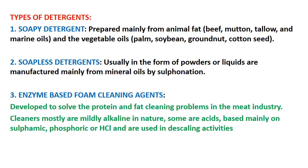Let us understand the types of detergents. We can have three different types: soapy detergents, soapless detergents, and modern enzyme-based cleaning agents. Soapy detergents are prepared mainly from animal fat such as beef tallow, mutton tallow, marine oils, and vegetable oils like palm, soybean, groundnut, and cotton seed. Soapless detergents are usually in the form of powders or liquids manufactured mainly from mineral oils by sulfonation. Enzyme-based foam cleaning agents are mildly alkaline in nature.